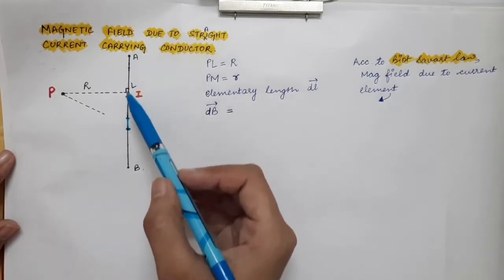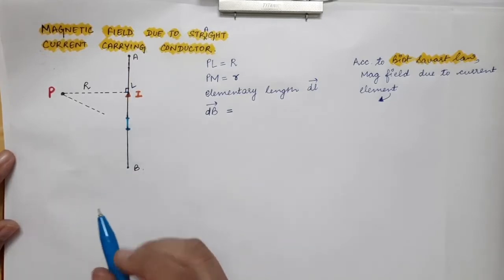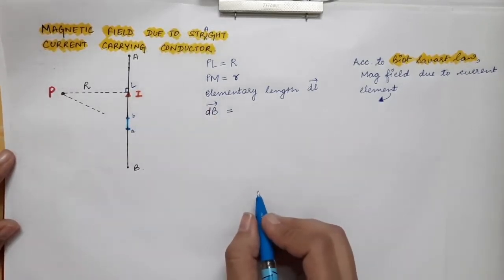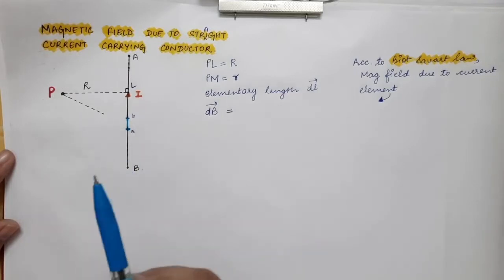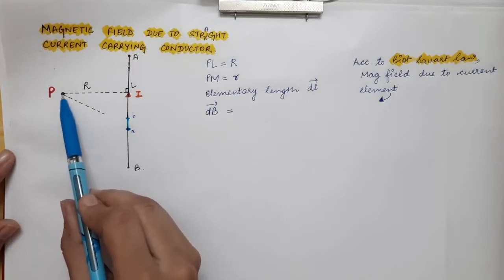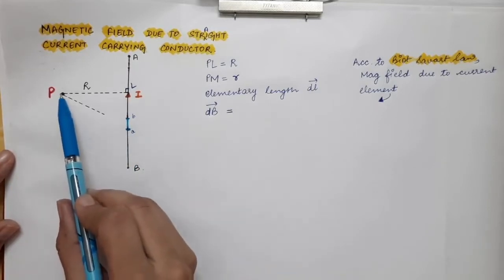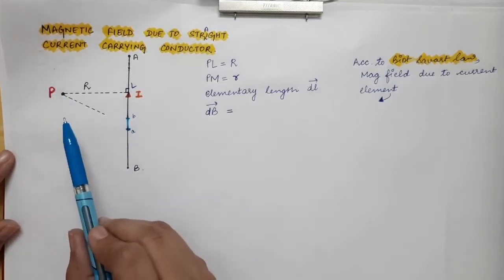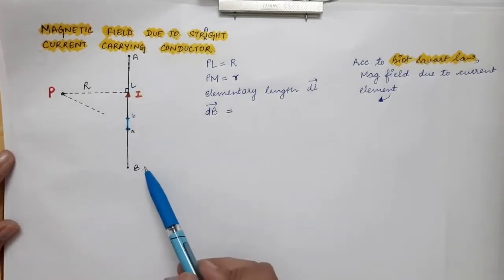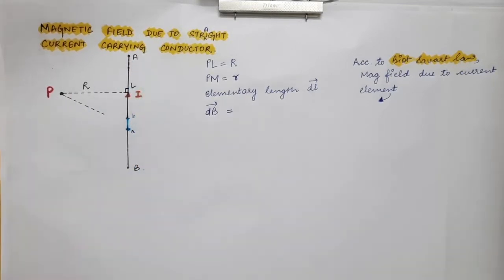I am taking a small length element on this conductor — let's say that is AB. AB is a small length element taken on this conductor. Firstly, I will find the magnetic field at point P due to this elementary length. And after that, I will do the integration over the whole length, which will give me the total magnetic field at point P due to this whole straight current-carrying conductor.